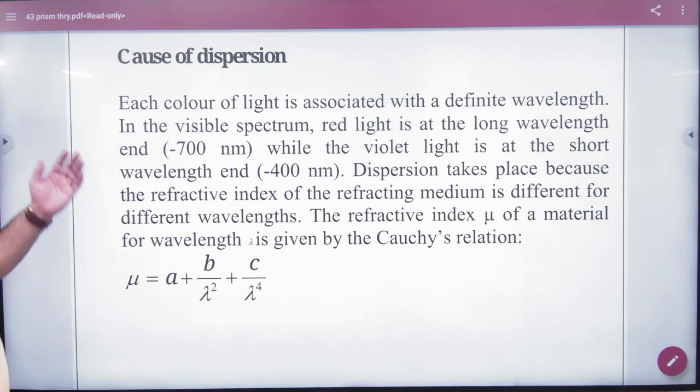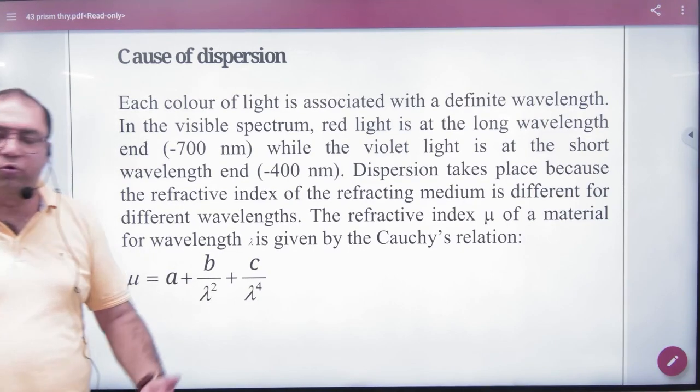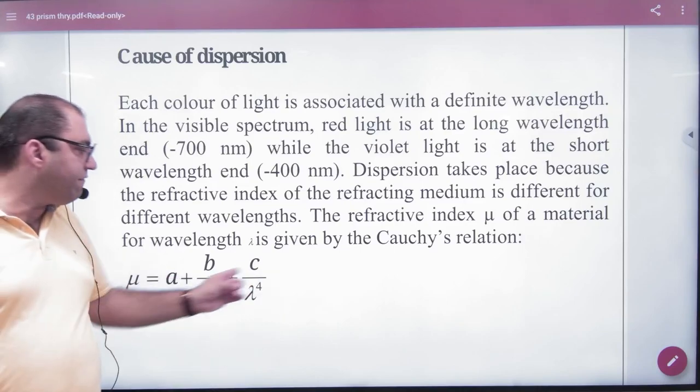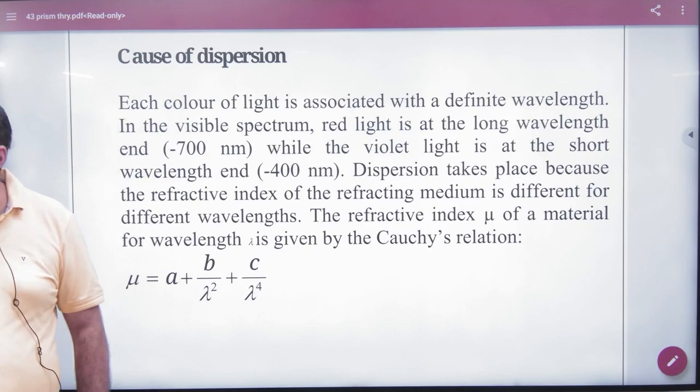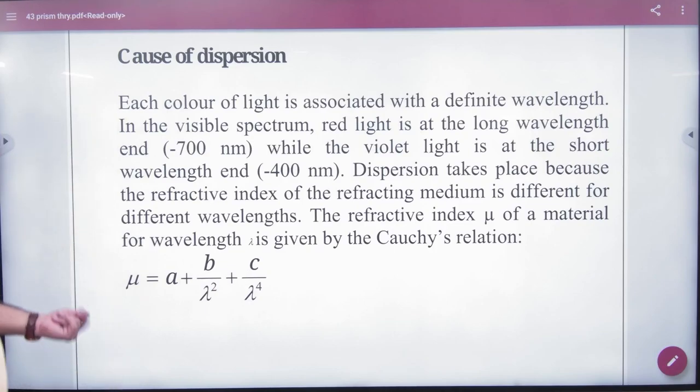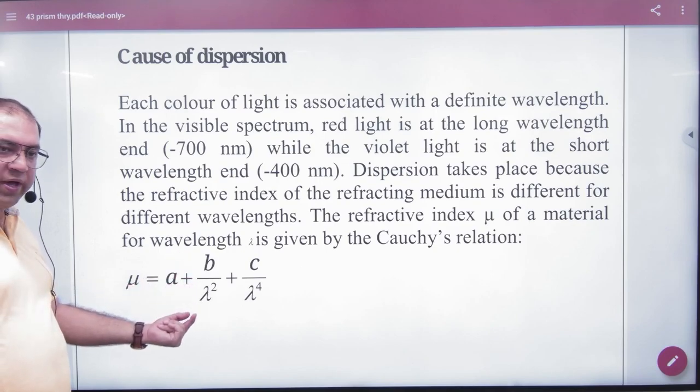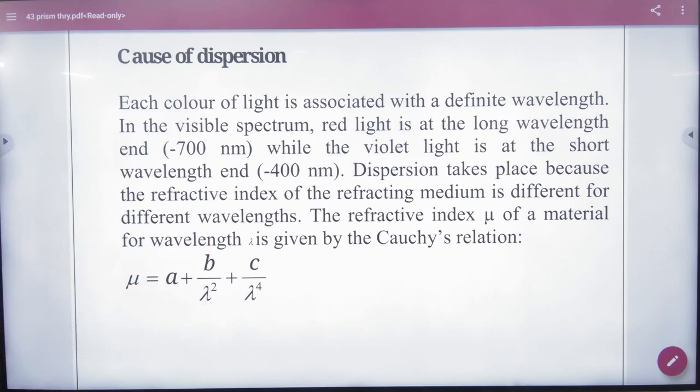The red light is the most long wavelength and the violet is the most short wavelength. A scientist has proved this result in any prism to calculate the refractive index for any prism, which is called the Cauchy's relation. So in this Cauchy's relation, the refractive index μ = a + b/λ² + c/λ⁴, where a, b, c are constants.